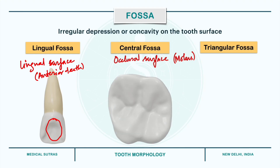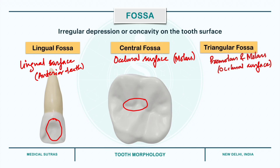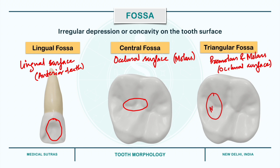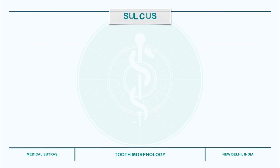For example, in this upper first molar, the depression at the center forms the central fossa. The triangular fossa are present on the occlusal surface of premolars and molars. For example, in this maxillary first molar, we have the mesial triangular fossa present distal to the mesial marginal ridge, and the distal triangular fossa present mesial to the distal marginal ridge.